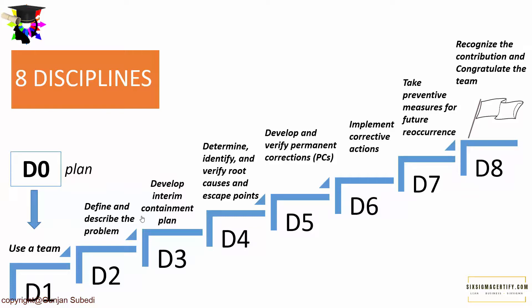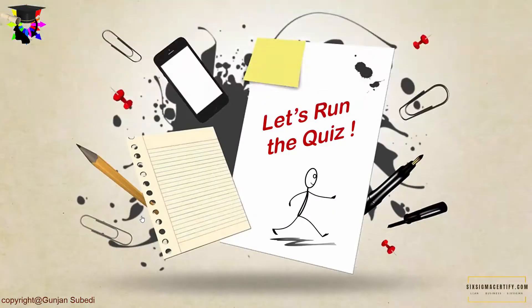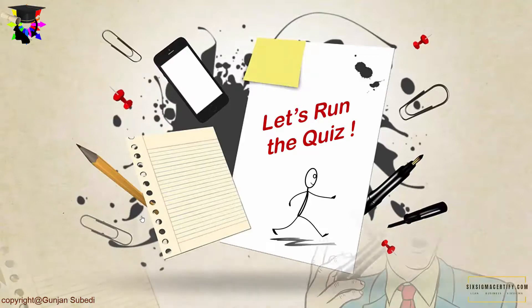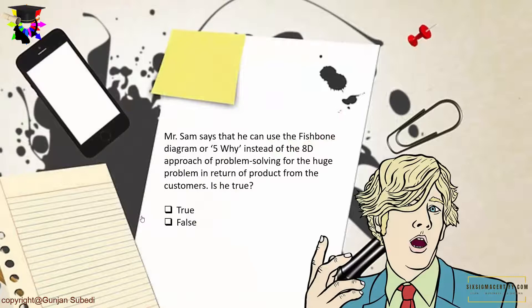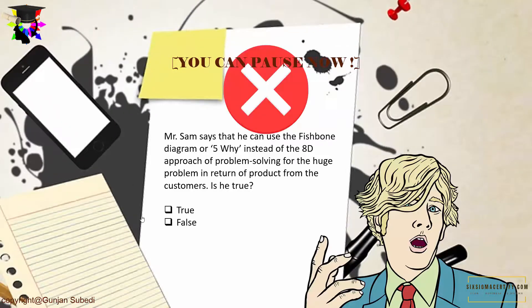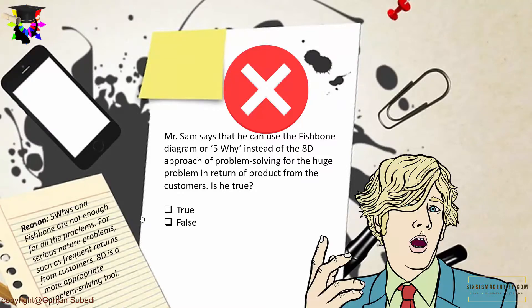This was just an overview of the 8D process; we will learn each step in much more detail in the coming lectures. Now let's run the quiz. Mr. Sam says he can use a fishbone diagram or 5 Whys instead of the 8D approach for a huge problem involving product returns from customers. The answer is no — not for all problems are 5 Whys and fishbones enough. For serious problems such as frequent customer returns, 8D is the more appropriate problem solving tool.